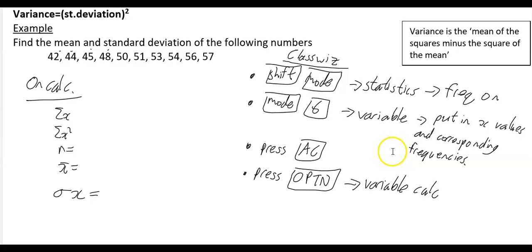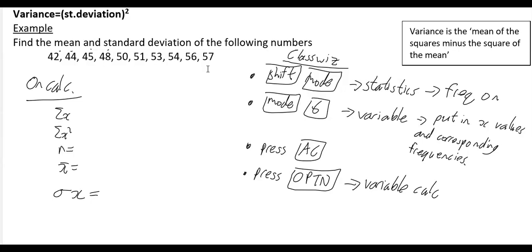Press Mode then 6 to go to the statistics section, then go to the variable section and put in your x values and corresponding frequencies. Hit 42 and press equals, then 44 equals, 45 equals, 48 equals, 50 equals, 51 equals, 53 equals, 54 equals, 56 equals, 57 equals. You'll see all frequencies default to 1. In other examples where you need to change frequencies, move right with the selector and adjust them.